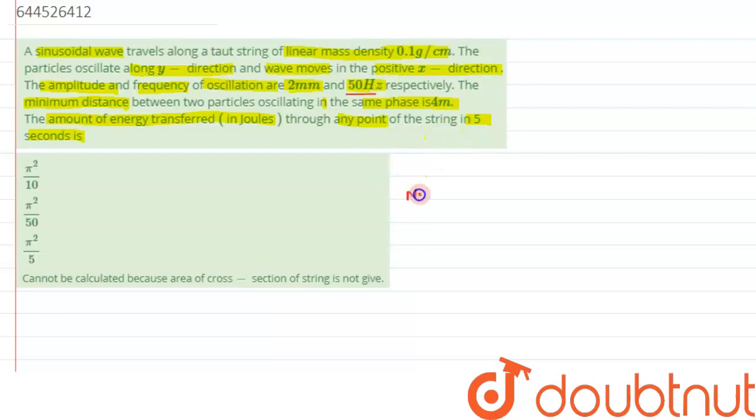We know number of waves passing through a given point in 1 second, and that is nothing but the frequency, it has been given as 50 Hz.